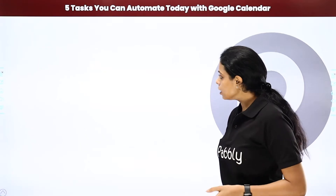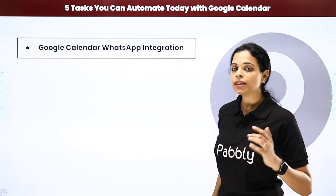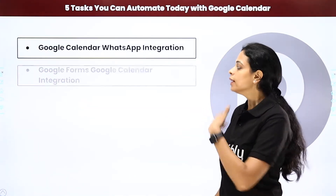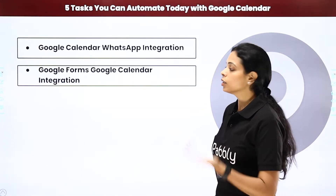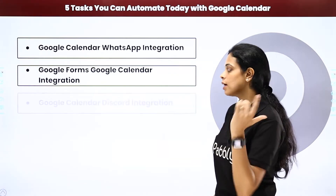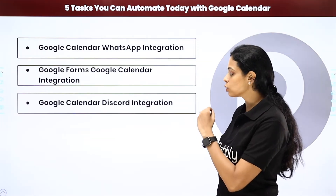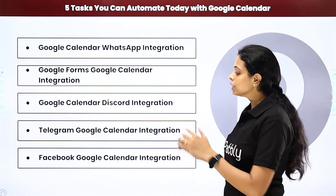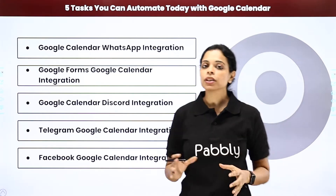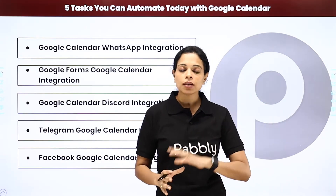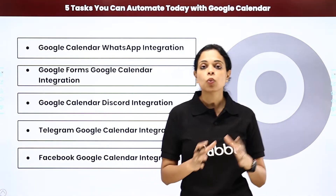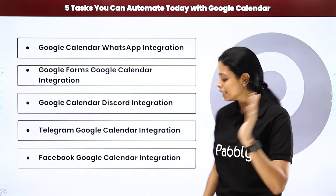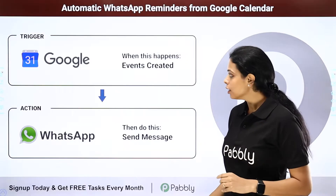We are going to see how you can integrate Google Calendar with WhatsApp, then with Google Forms, again with Discord, Telegram, and Facebook. These are all very important automations that can make your work process a lot easier than it was before. Let's see how.